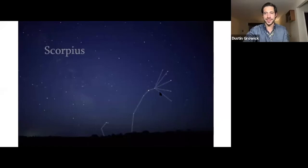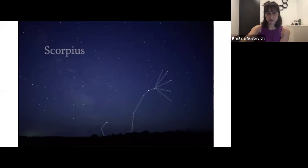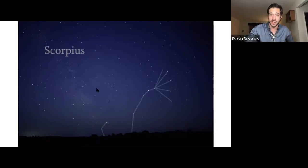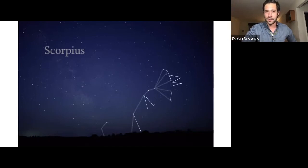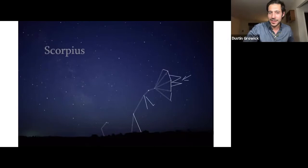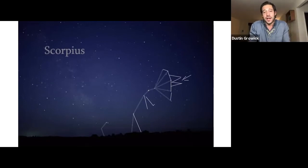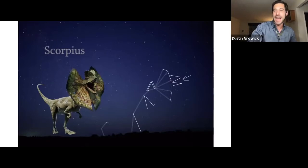Christina, do you have any idea what Scorpius is going to become? Maybe an ankylosaur with a club tail? Also worth mentioning — the scorpion defeated Orion the Hunter, and Zeus put it in the sky. But no longer is it a scorpion. With the spit coming out — yes — it is Dilophosaurus! There's no scientific evidence for either a frill or venom-spitting; that's total creative license from Jurassic Park. But the cool thing is the double crest on the head — that's real. Scorpius is now Dilophosaurus.